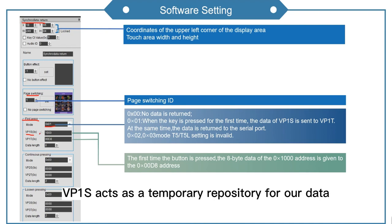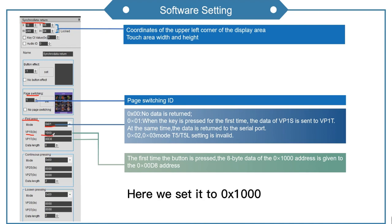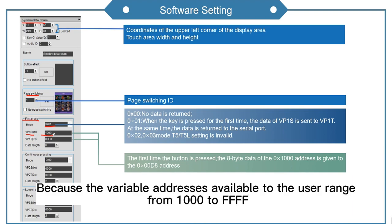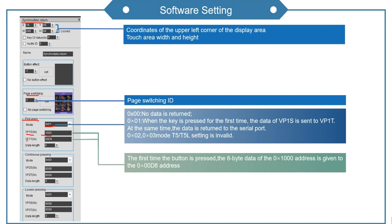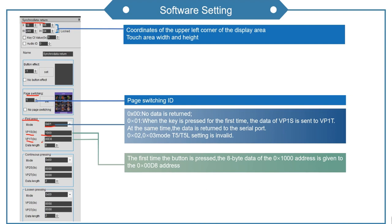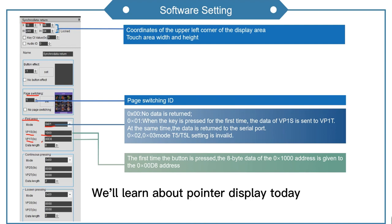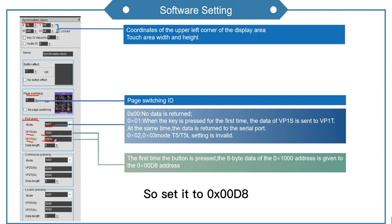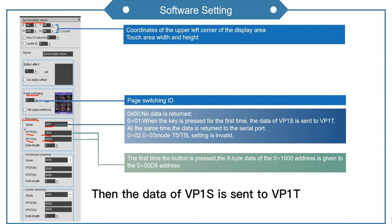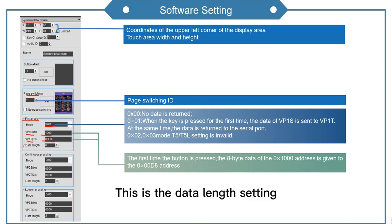VP1S acts as a temporary repository for our data. We set it to 1000 because the variable addresses available to the user range from 1000 to FFFF. VP1T is the actual data address — since we're learning about pointer display today, we set it to 00D8, so the data of VP1S is sent to VP1T.